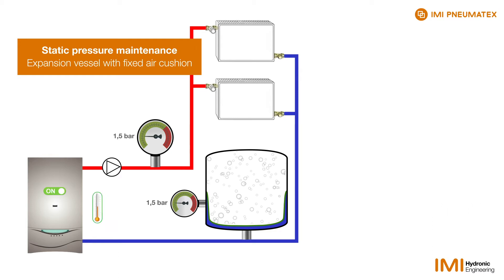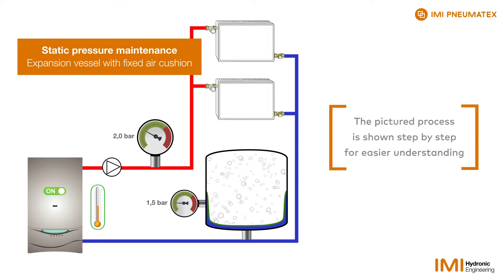When the boiler is switched on and the water heats up and expands, the pressure increases, for example to 2 bar. Water is forced into the vessel and compresses the gas on the other side of the membrane to 2 bar.